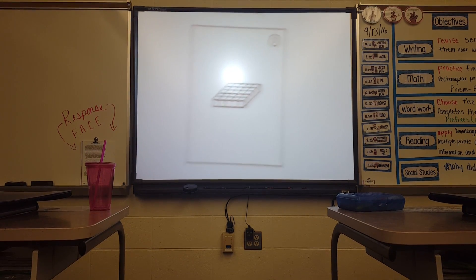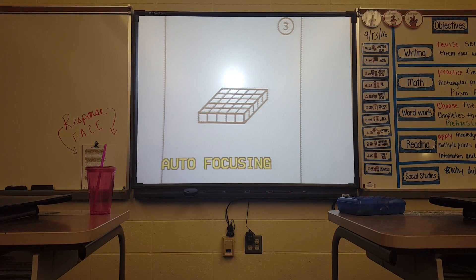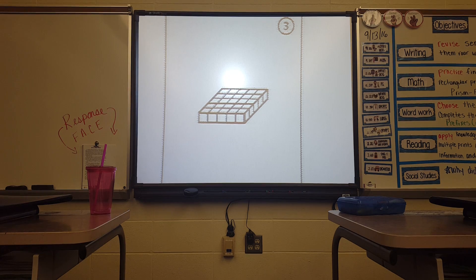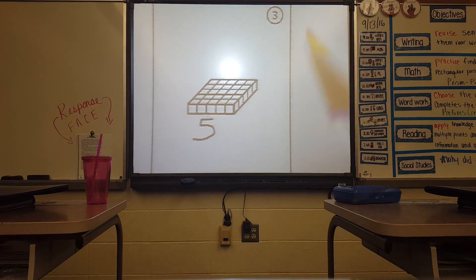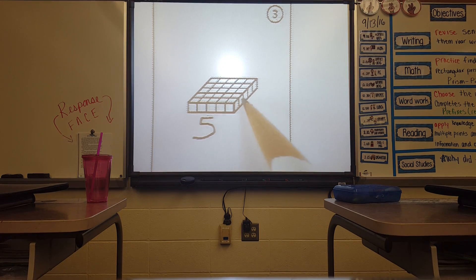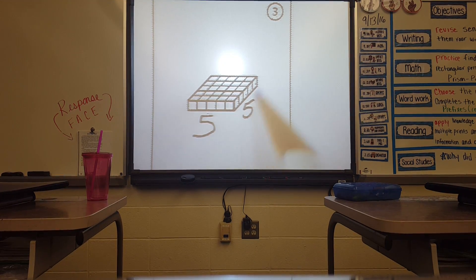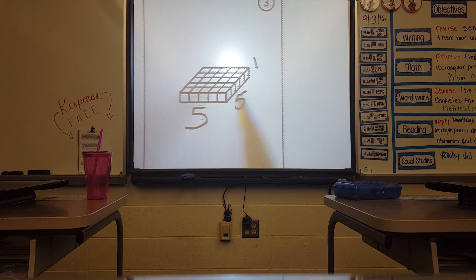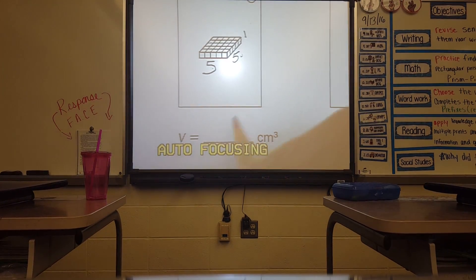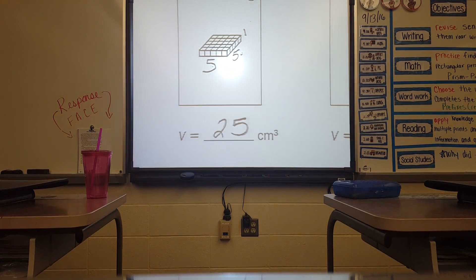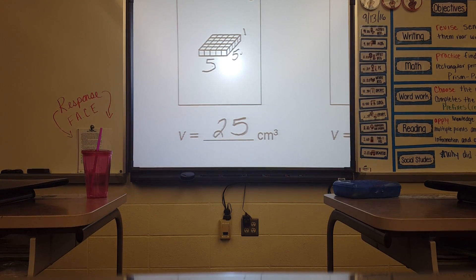To find the volume we know it's length times width times height. The length here is 5, the width is 1, 2, 3, 4, 5, and the height is 1. So 5 times 5 times 1 is 25. The volume for this shape is 25 centimeters cubed.